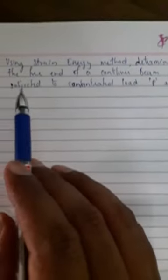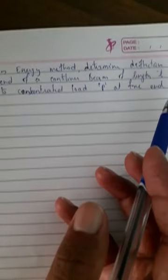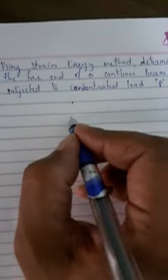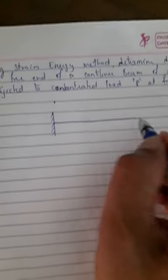Let us start with a simple numerical example using the strain energy method. Determine deflection, that is delta, at the free end of a cantilever beam of length L subjected to a concentrated load P at the free end. Let me draw the diagram. This is the cantilever beam AB, P is the concentrated load, and let the length be small l.